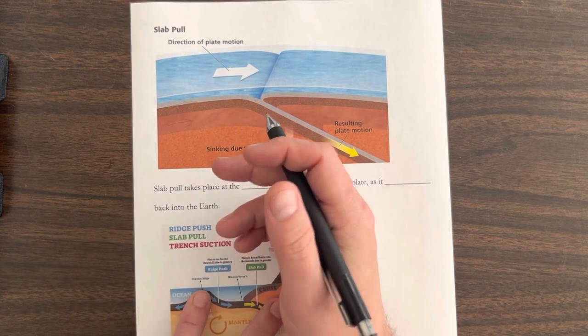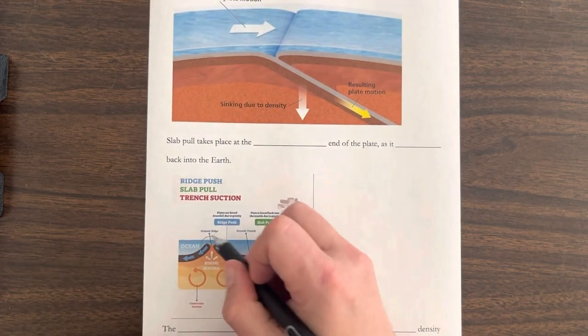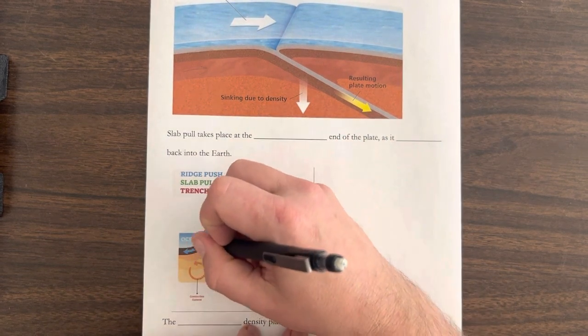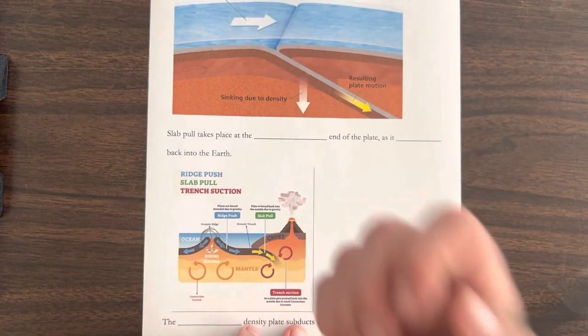We had ridge push from our peak. Our peak here, gravity's pushing down that ridge or pulling down on that ridge.